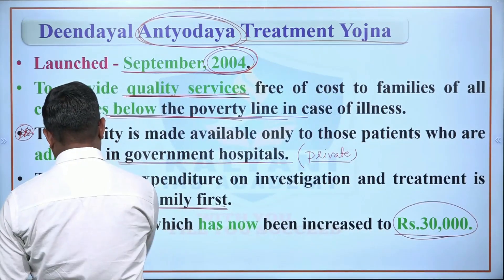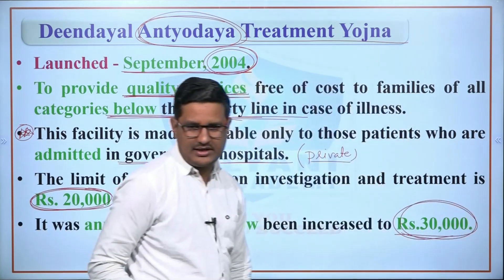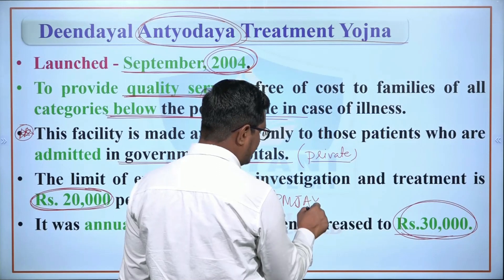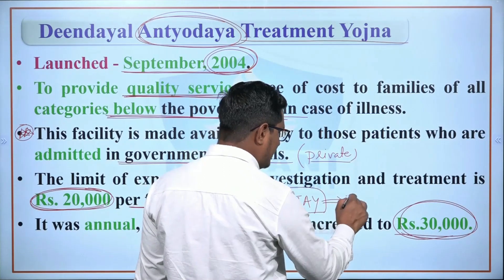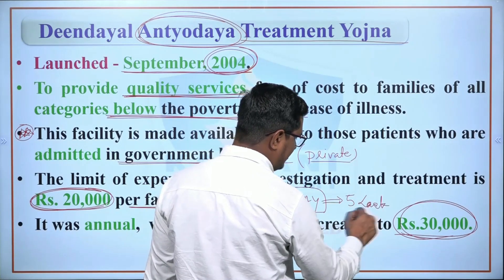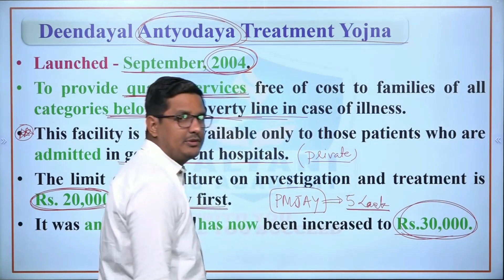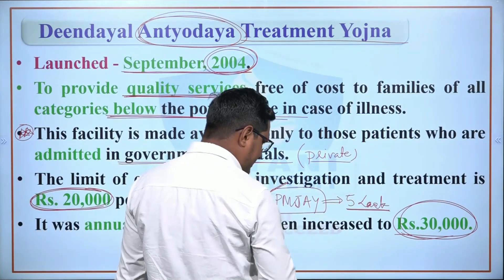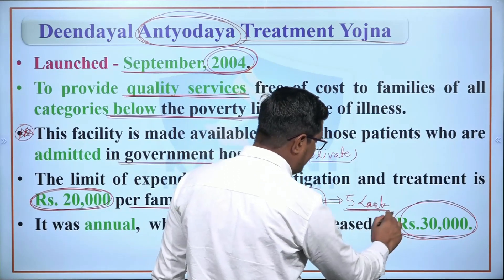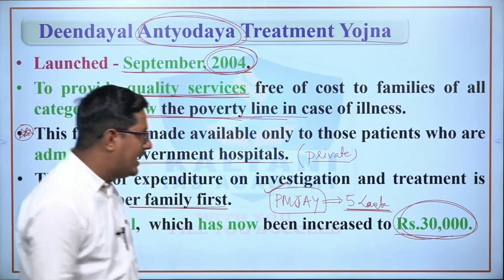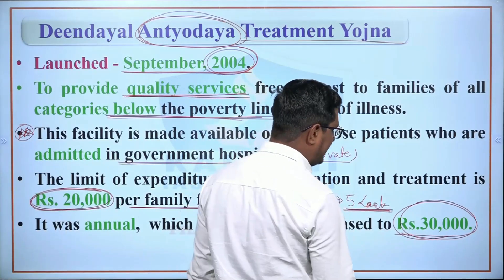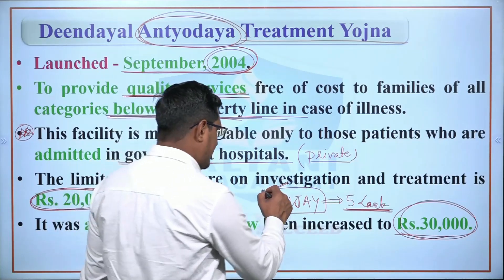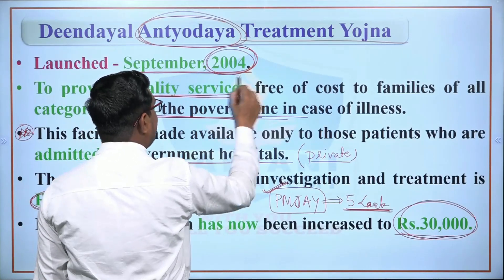Presently, the Pradhan Mantri Jan Arogya Yojana provides health security of up to Rs. 5 lakh per person. Any person with an Ayushman Card can get treatment in a government hospital or notified private hospital and will be assisted up to Rs. 5 lakh under Pradhan Mantri Jan Arogya Yojana. However, this scheme was launched later, whereas the Deen Dayal Antyodaya Treatment Yojana was launched in September 2004.